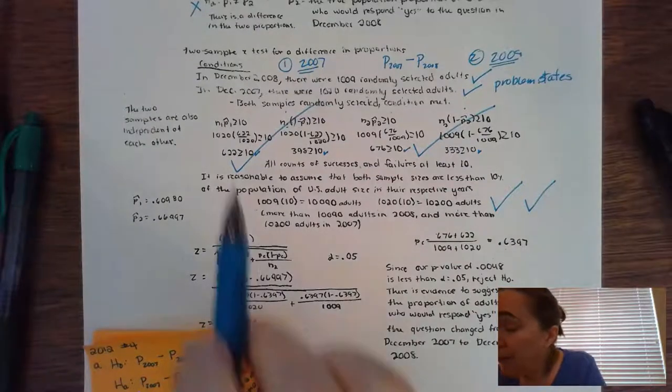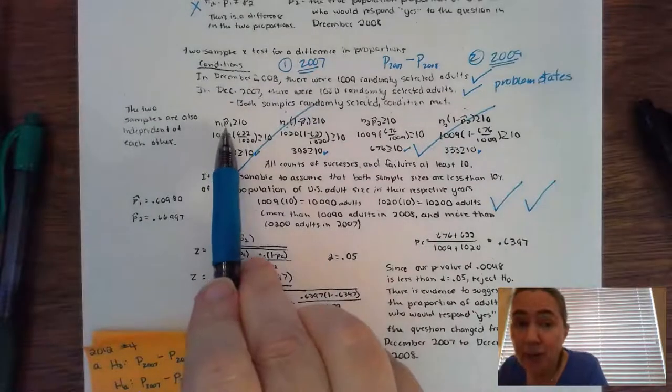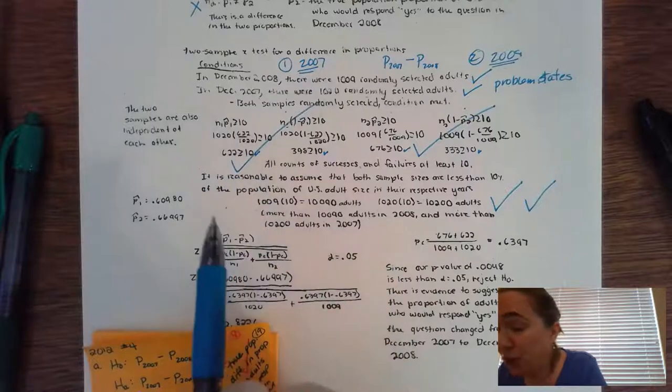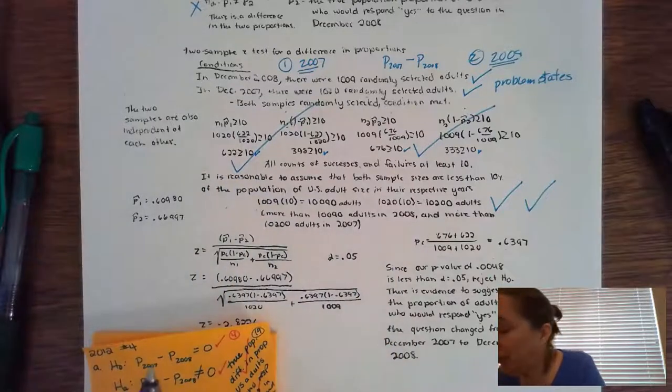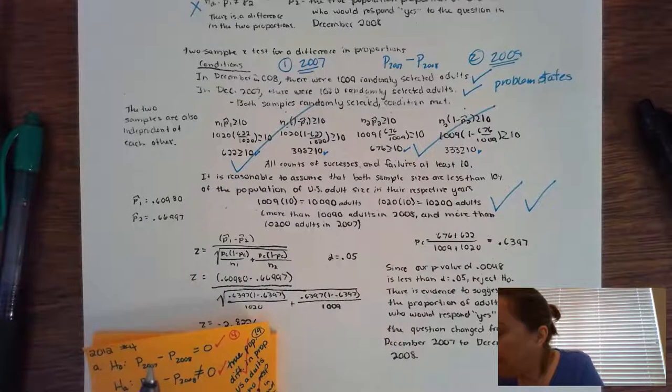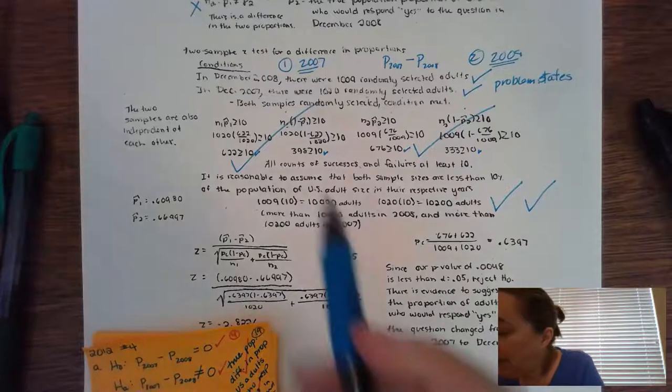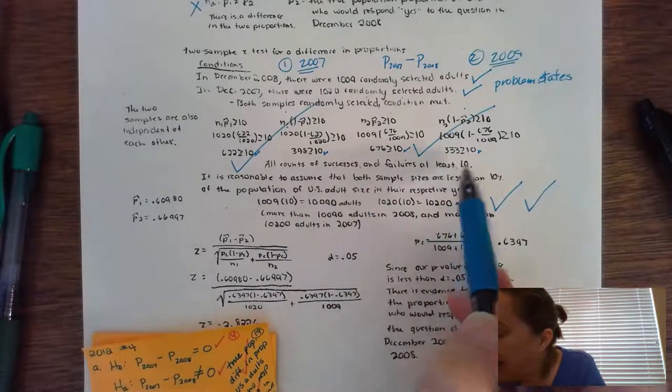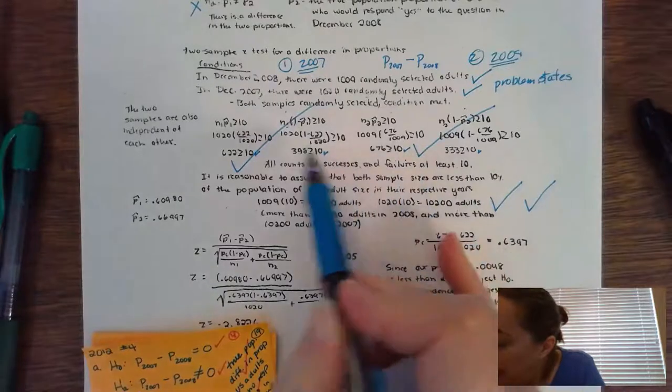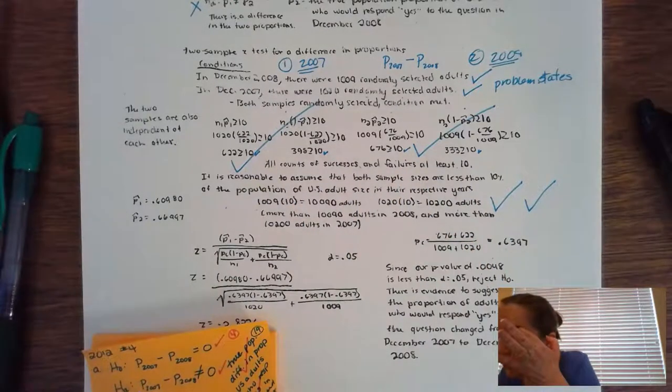The only thing that I really find painful is that their subscripts are using ones and twos. That is not acceptable for the AP test. Now they do say all counts of successes and failures are at least 10. Again, that takes the place of these little itty bitty check marks that they've shown. So we're good to go.